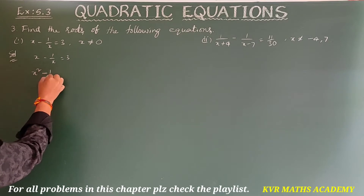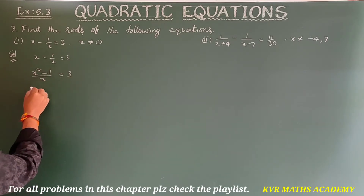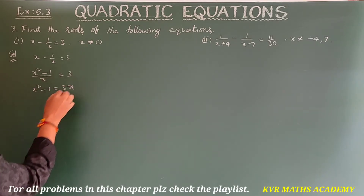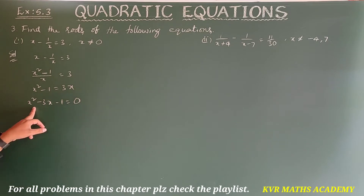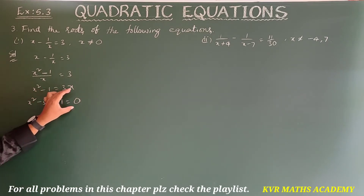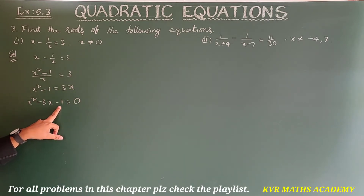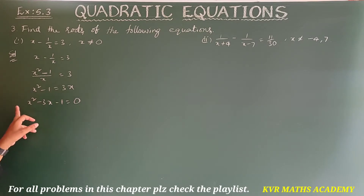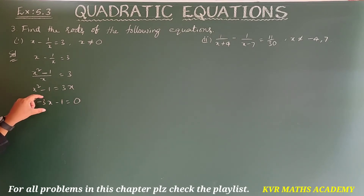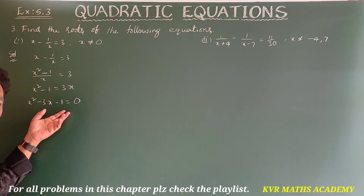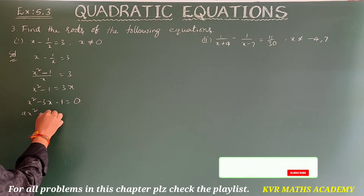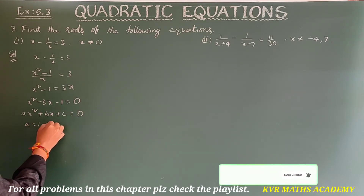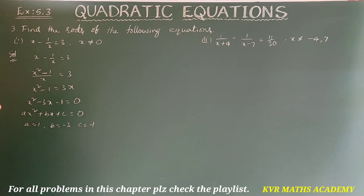For the first equation, multiply both sides by x: x squared minus 1 by x gives x squared minus 3x minus 1 is equal to 0. It is now in the form of a quadratic equation. We cannot easily use the factorization method here, so let's use the formula method. Here a is equal to 1, b is equal to minus 3, and c is equal to minus 1.